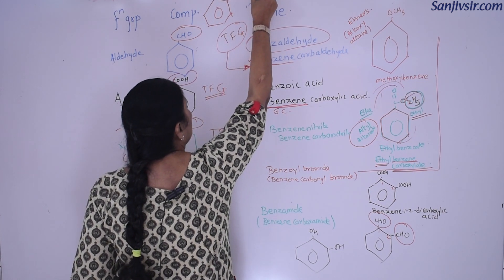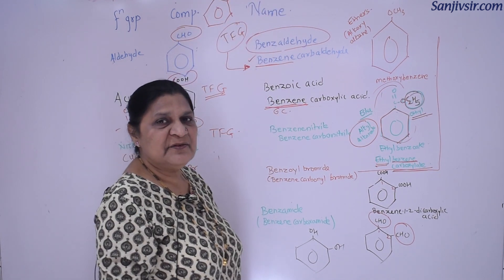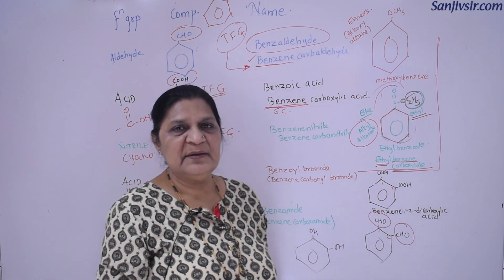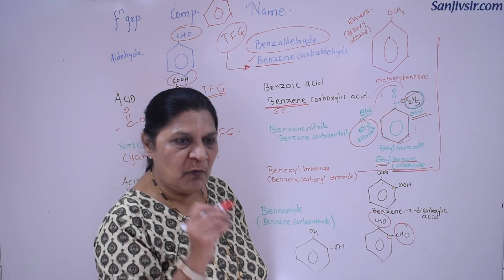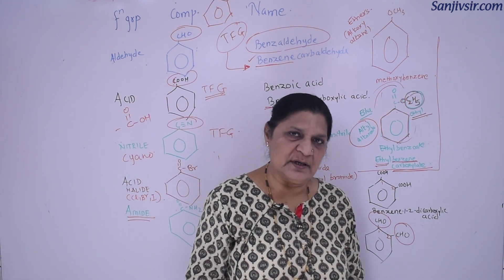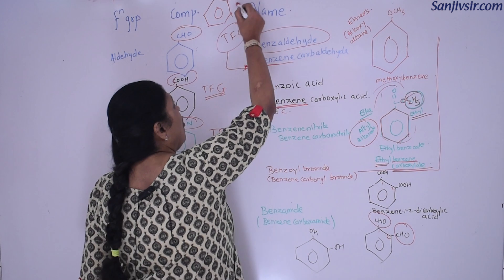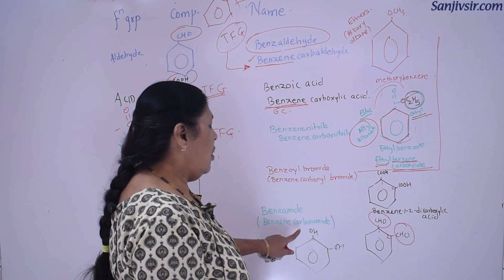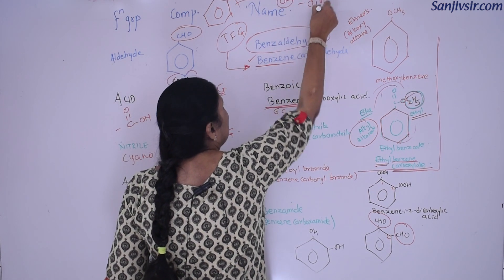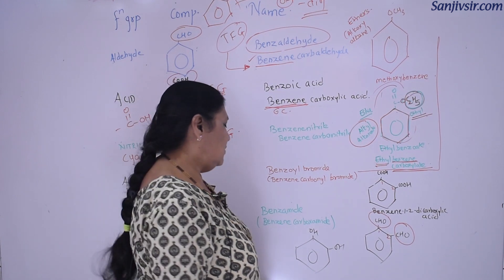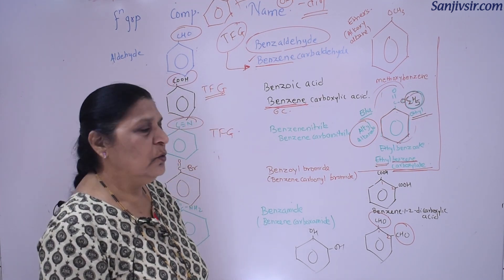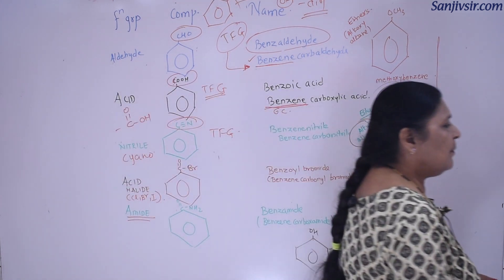This compound has a hydroxy group on benzene. Its more accepted name is phenol. IUPAC calls it one-hydroxybenzene, but IUPAC also says it is acceptable to call it phenol. If two OH groups are present, we call them diols — so the compound would be benzene-1,2-diol.